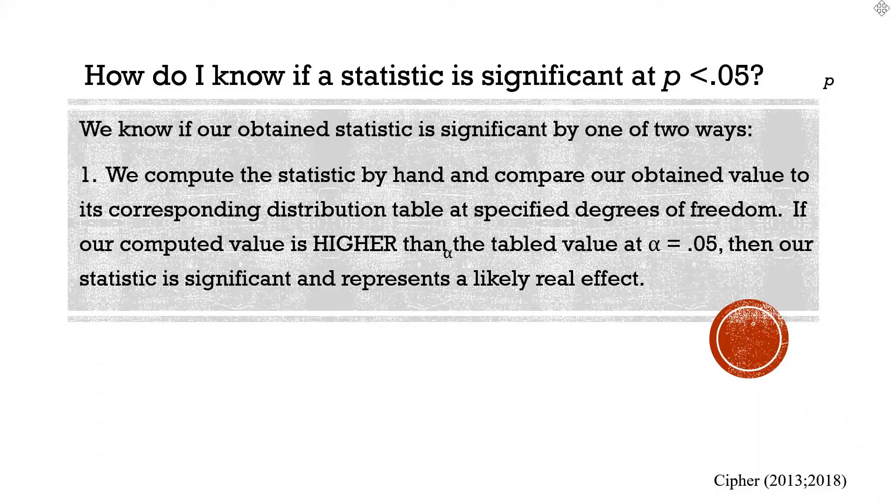And so, we go to that table. If our computed r value is higher than the table value at alpha equals 0.05, then our r is significant and likely is a real effect. If our Pearson r value that we computed is lower than the value in the table, then our statistic is not significant. And then we retain our null hypothesis.